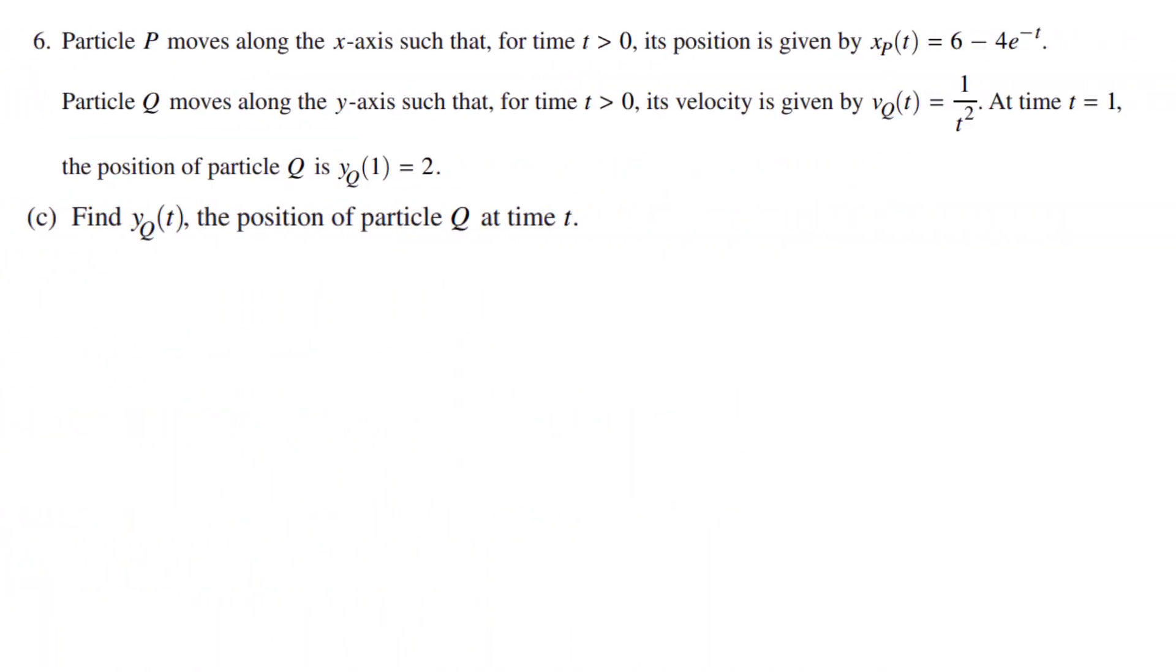In Part C, we must find yq of t, the position of particle Q at time t. Given the velocity vq, we can find the position yq by anti-deriving. We would get the integral of t to the power of negative 2 dt which equals t to the power of negative 1 divided by negative 1 and add c to all of that. To find the constant,